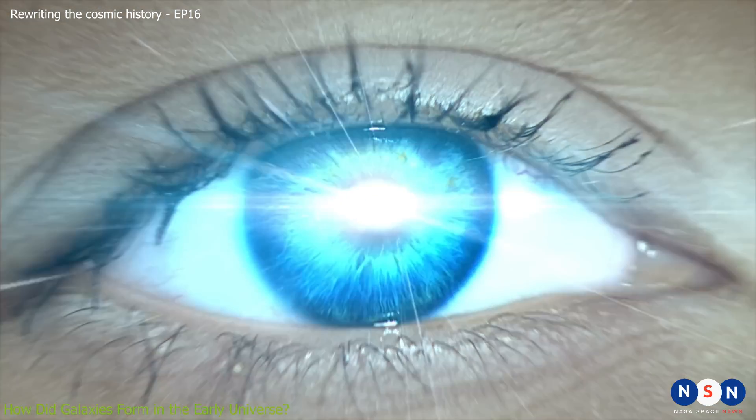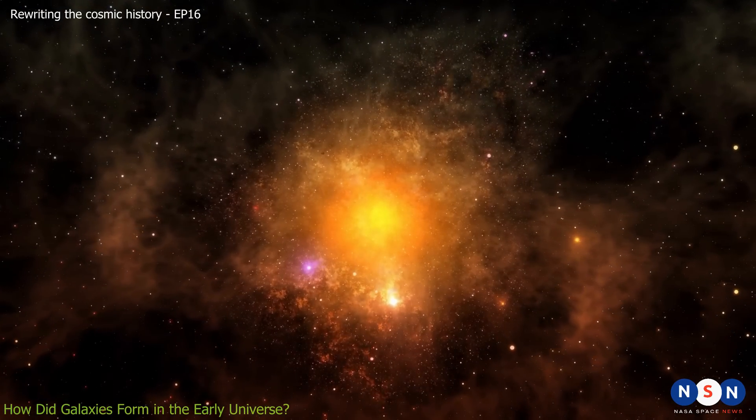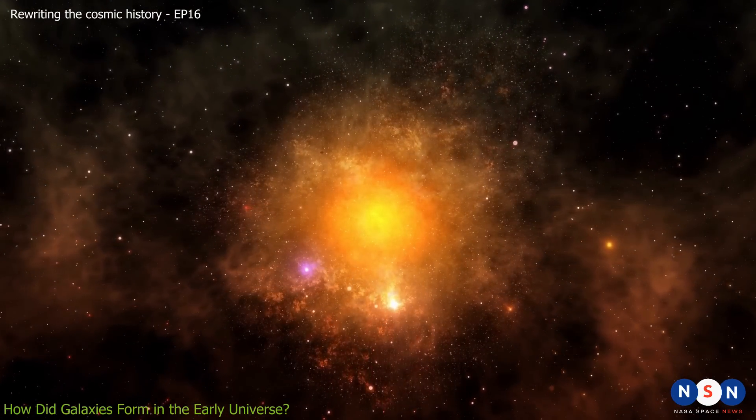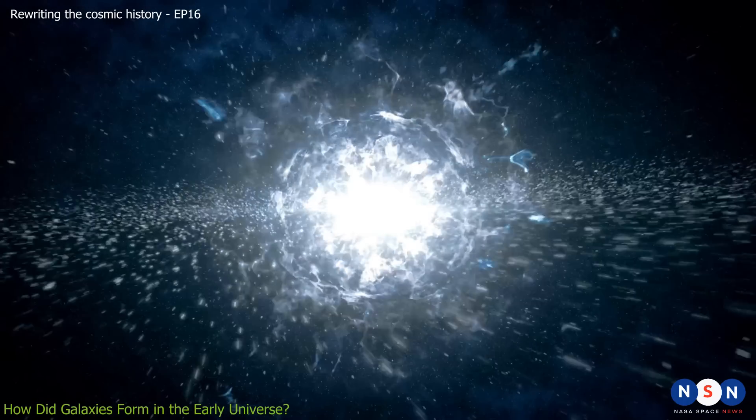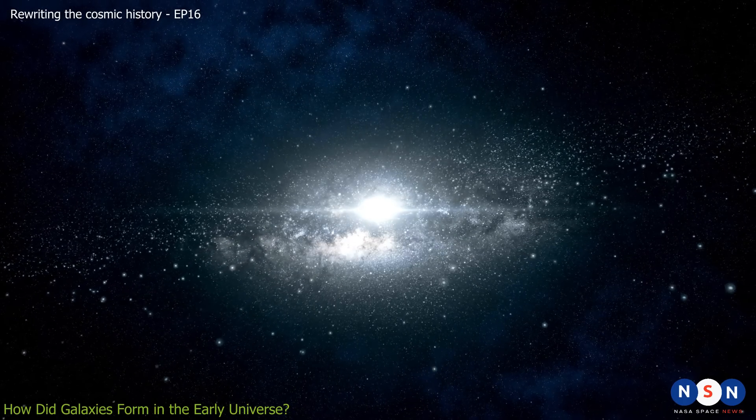To understand these mysterious galaxies, we need to go back to the very early stages of the universe, when it was just a hot and dense soup of matter and radiation. About 380,000 years after the Big Bang, the universe cooled enough for atoms to form, mostly hydrogen and helium.